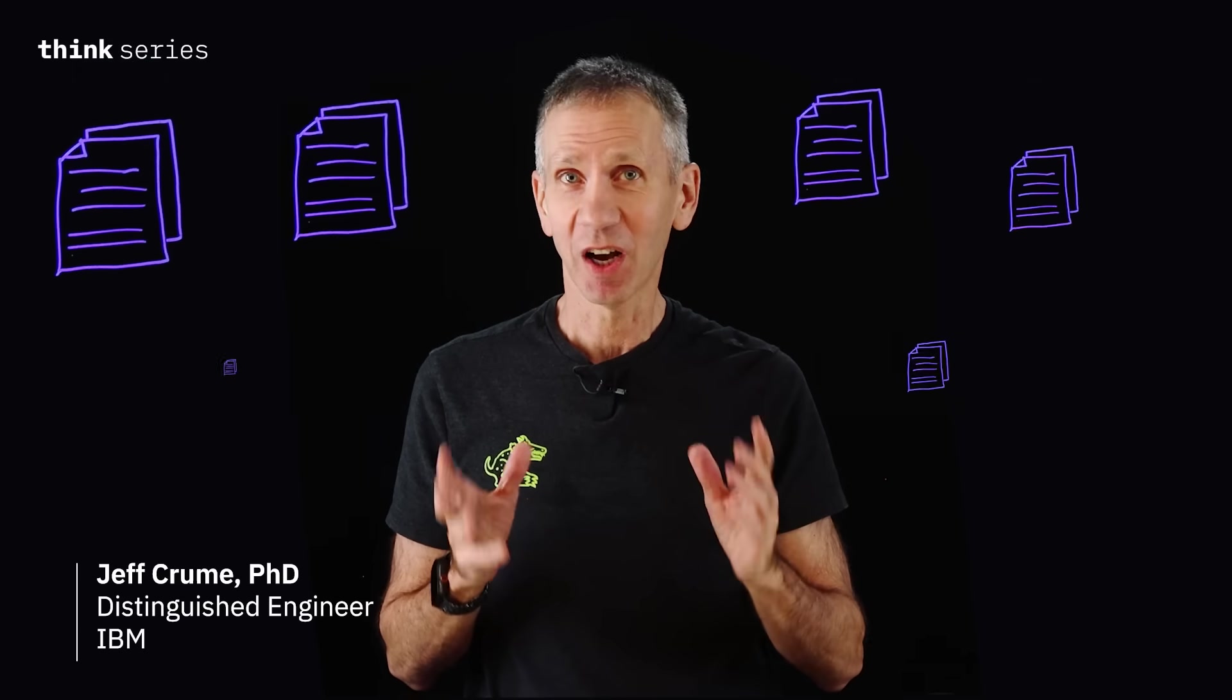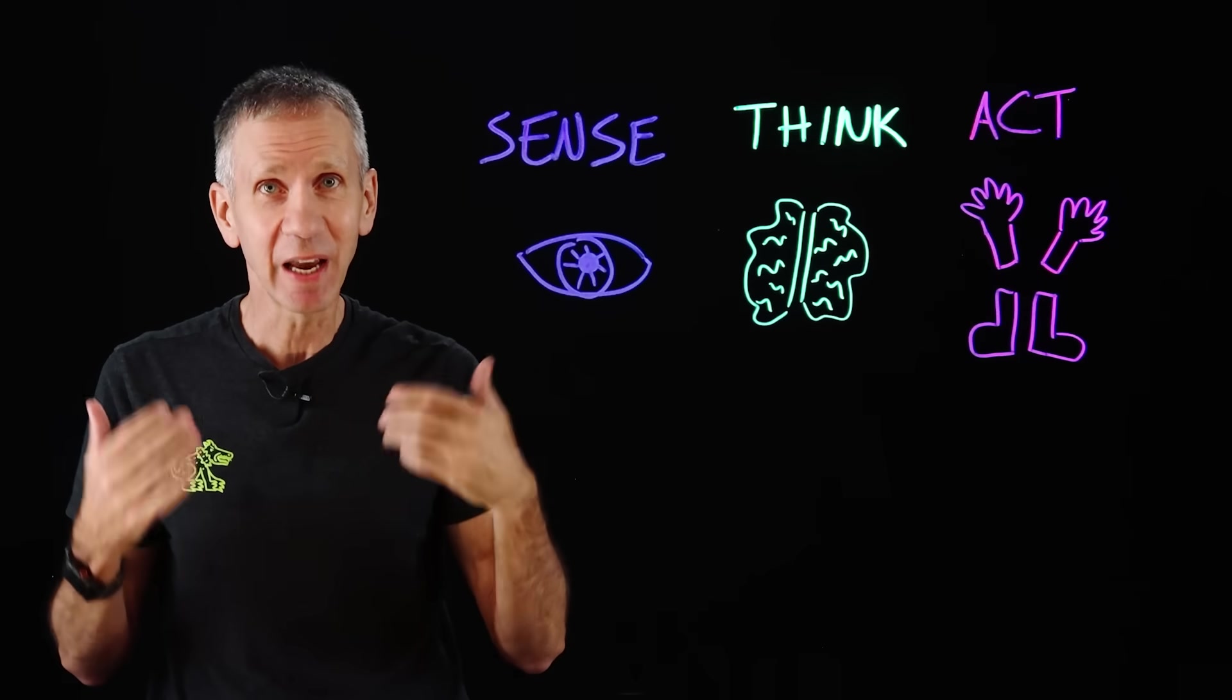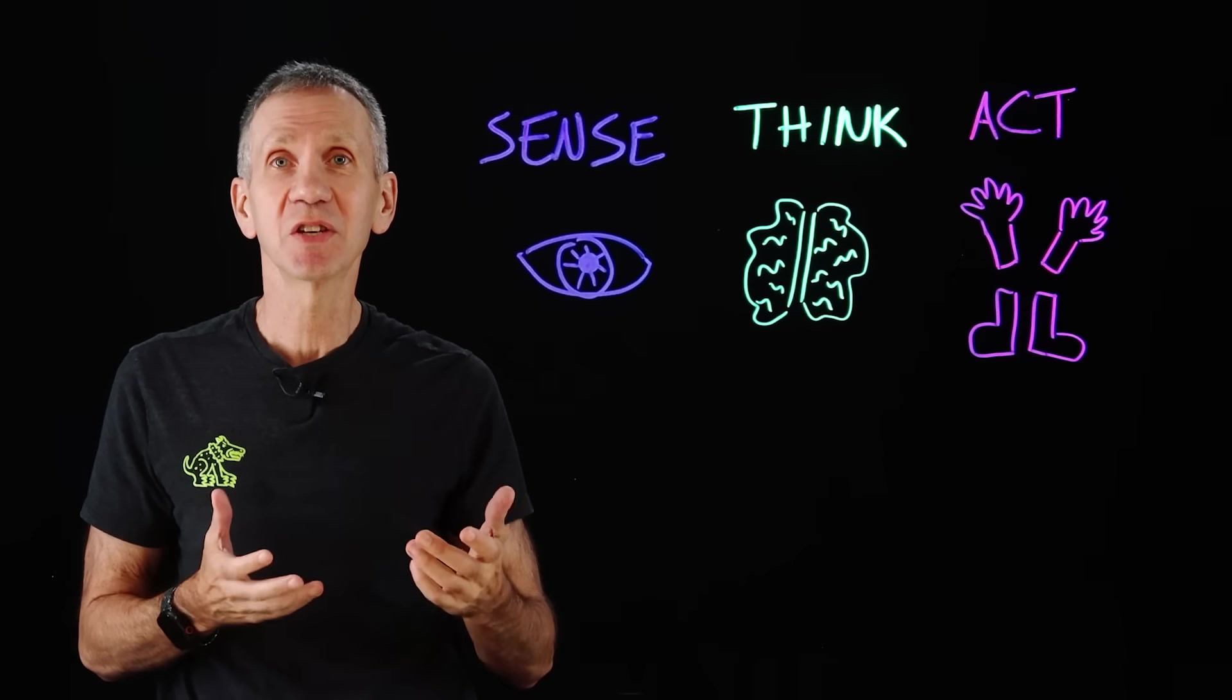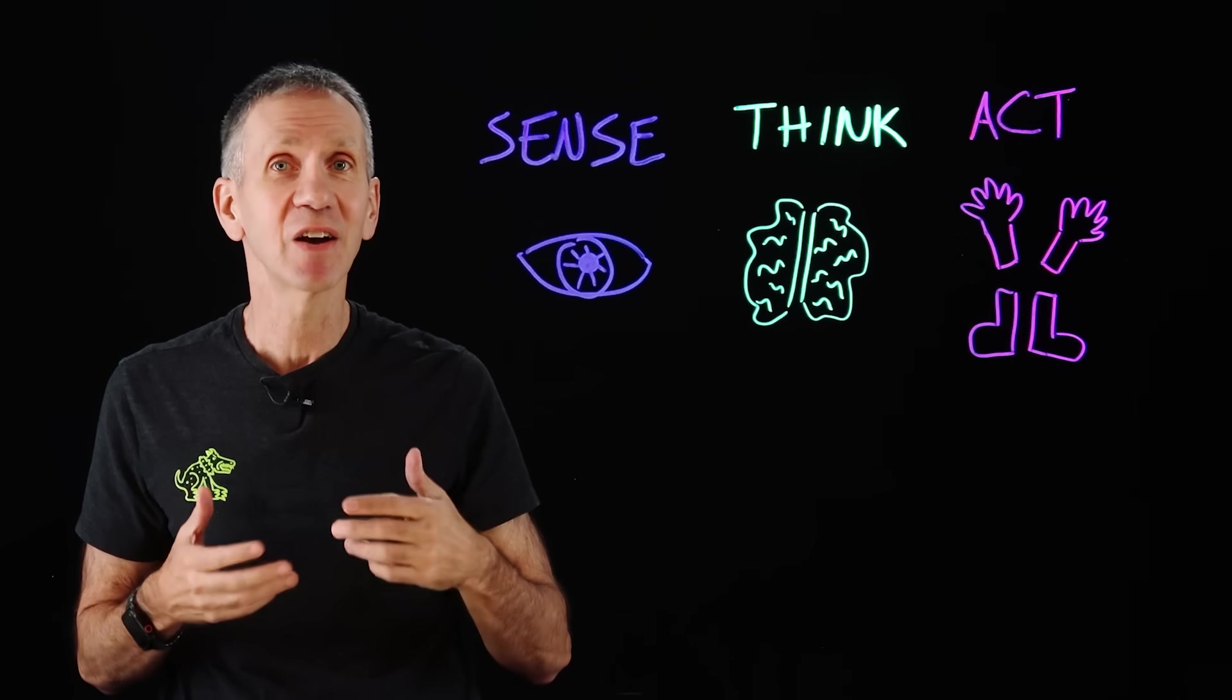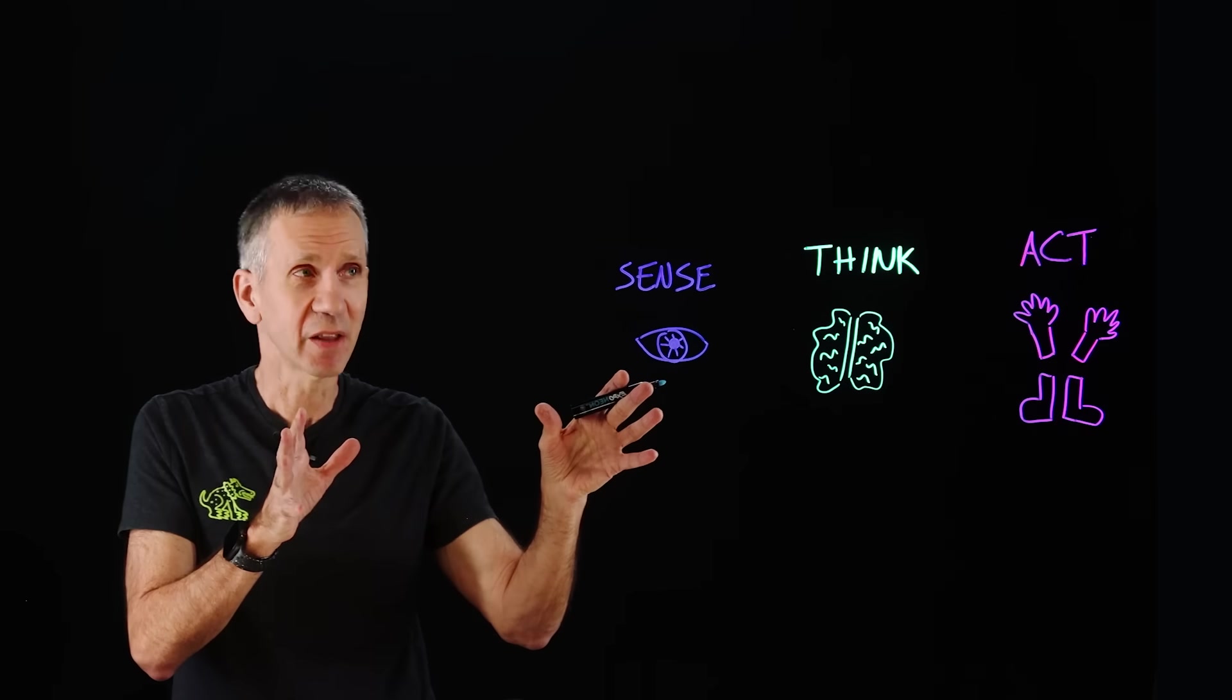AI agents are popping up everywhere, from smart assistants to autonomous research tools to self-driving cars. But what actually makes these things tick? In this video, we're going to break down the anatomy of an AI agent. We'll peel back the layers—sensing, thinking, and acting—to show how data from the real world turns into decisions and then is translated back out as actions. So now let's take a look at how all of these things work together.